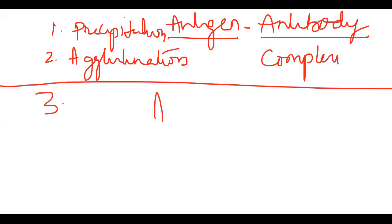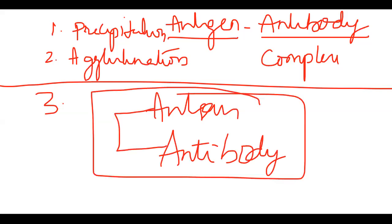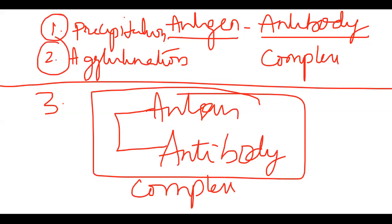In the third case: you cannot see antigen, you cannot see antibody, and you cannot see the antigen-antibody complex either. That means in those cases where the complex is neither seen as precipitation nor agglutination — you cannot see the complex at all with naked eye or microscope.